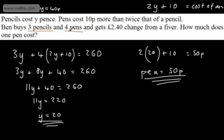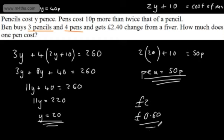We can verify: four pens at 50p each is £2.00, and three pencils at 20p each is 60p. Total is £2.60, which matches. The answer is one pen costs 50p. Even if you could spot the answer by observation, it's worth setting up the equation systematically for when numbers are harder.